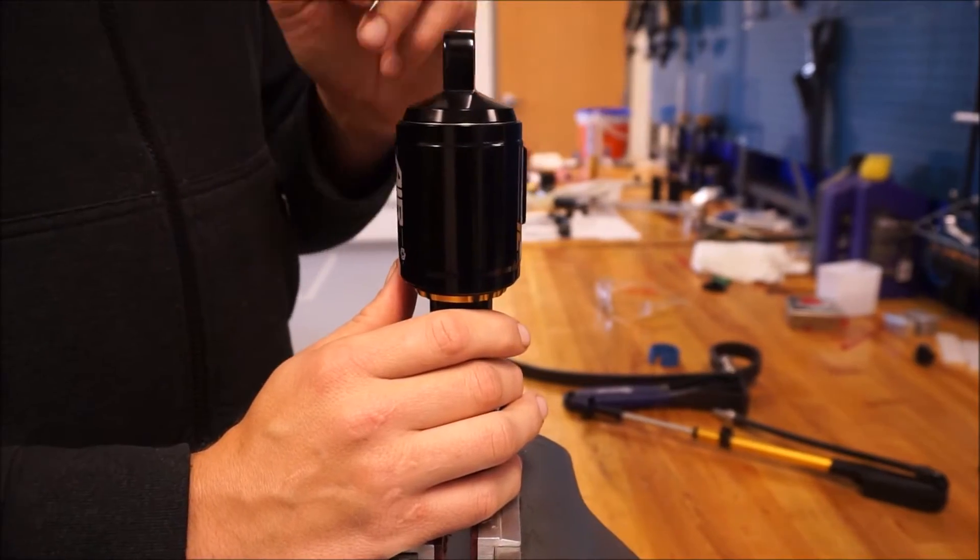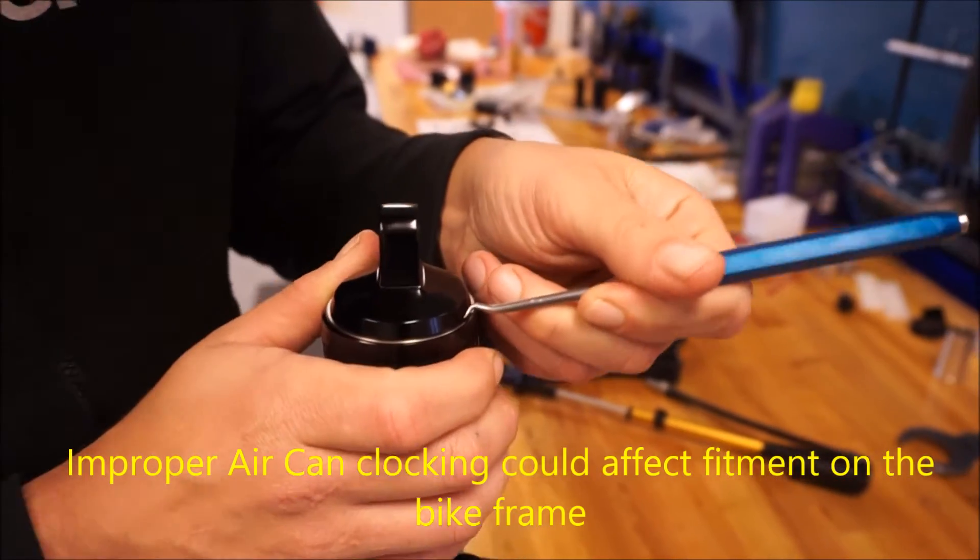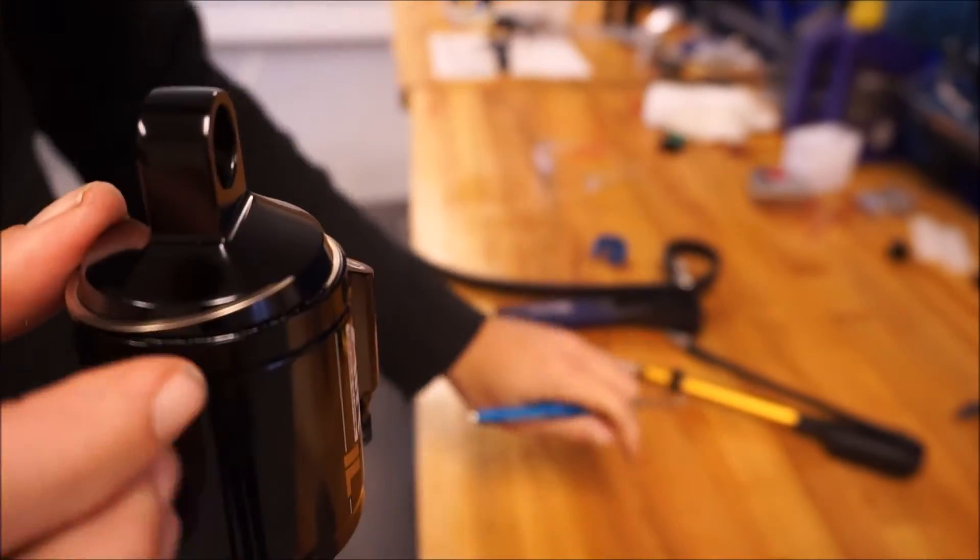Note the clocking of your air can and use a pick to gently remove the circlip.